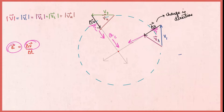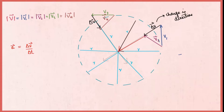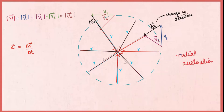But what is meant by the word radially? Radially means along the radius, and as the centripetal acceleration is directed towards the center along the radius of the circular path, centripetal acceleration is sometimes referred to as radial acceleration. So don't get confused if someone uses the term radial acceleration instead — it's just a fancy word for centripetal acceleration.